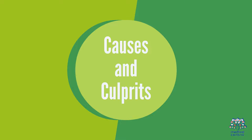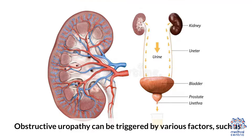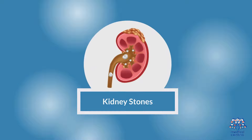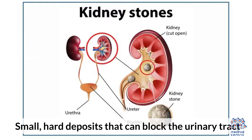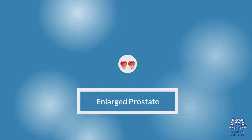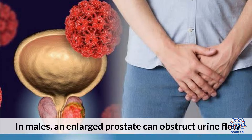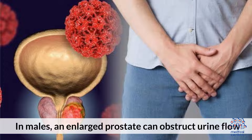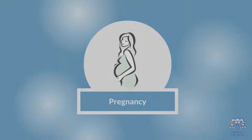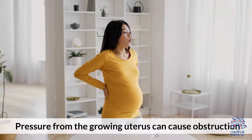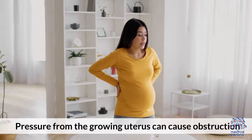Causes and Culprits: Obstructive uropathy can be triggered by various factors such as kidney stones — small, hard deposits that can block the urinary tract; an enlarged prostate, where in males an enlarged prostate can obstruct urine flow; and pregnancy, where pressure from the growing uterus can cause obstruction.